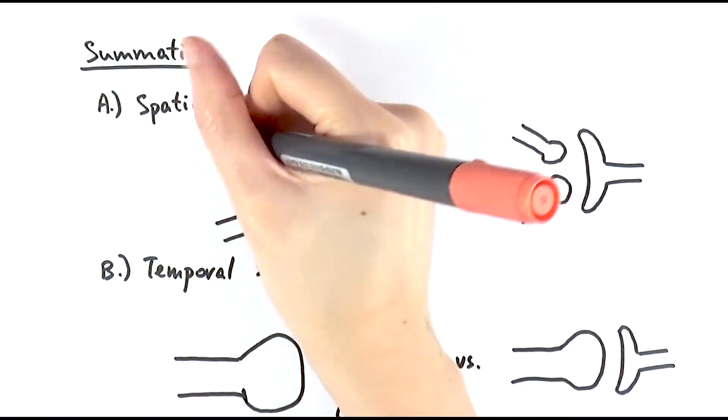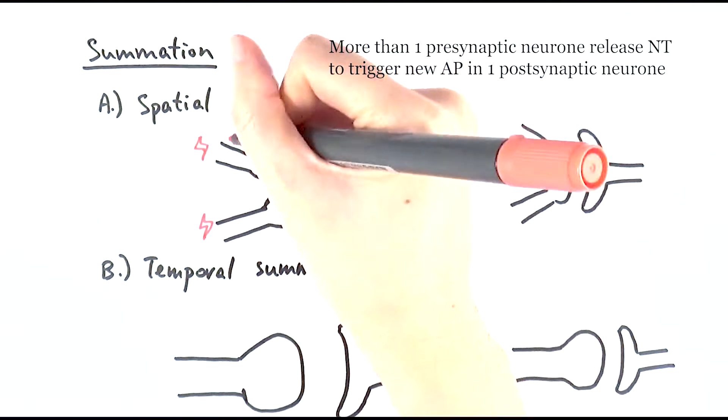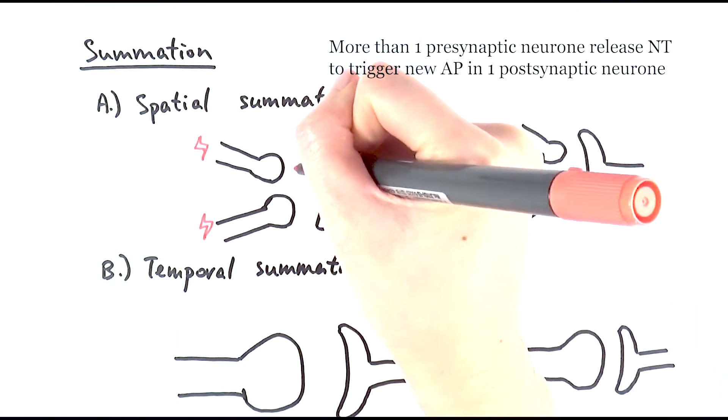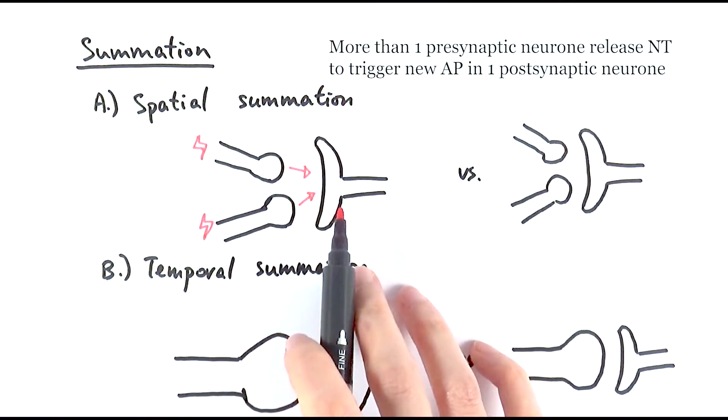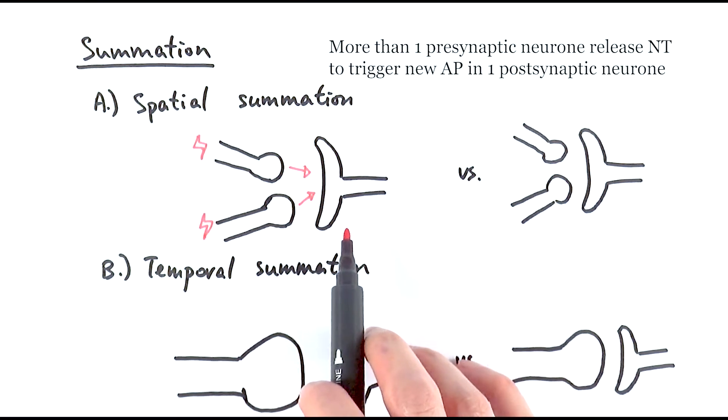In spatial summation, multiple, or at least more than one, of the presynaptic neurons would release the neurotransmitters to diffuse across the synapse gap to the next bit to trigger the action potential. This is what spatial summation is.